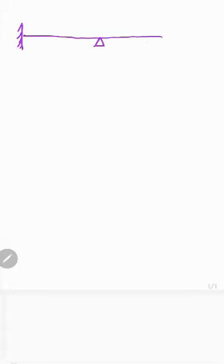We'll see analysis of a continuous beam with sinking support and overhang. Let me state the problem first. One end is fixed and another end is overhang. I have an eccentric point load for the first span, UDL in the second span, and overhang for the third one — 20 kilonewton.